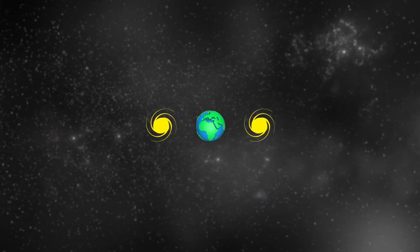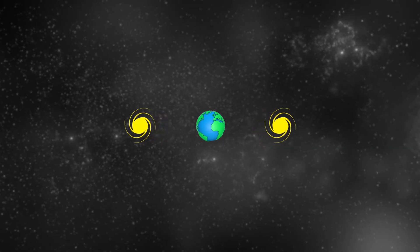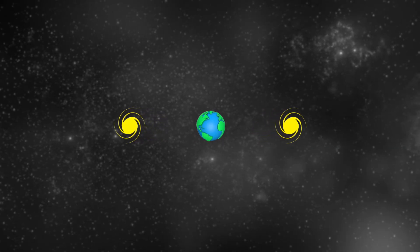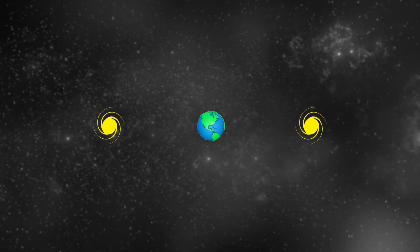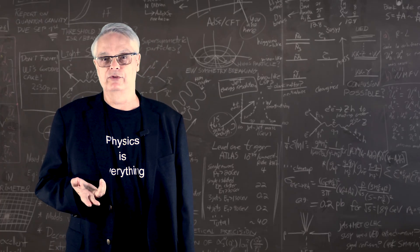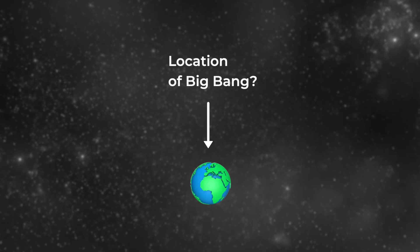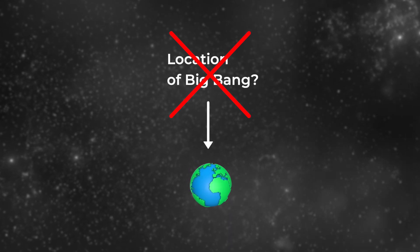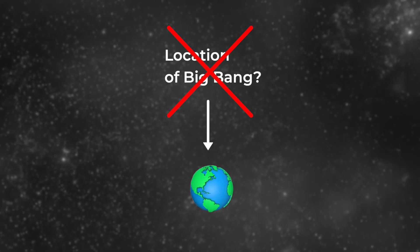Instead, when we look out into the universe, we see the galaxies moving away from us pretty uniformly, no matter the direction. Galaxies farther away from us move faster than closer ones, but direction doesn't matter. This observation means one of two things: either the Earth is located at the spot where the Big Bang occurred, or there's another explanation. And it's the second explanation that we think is true. So what is it?